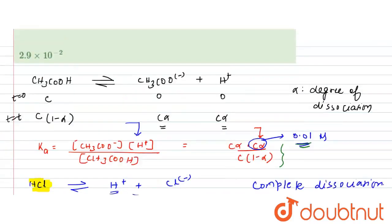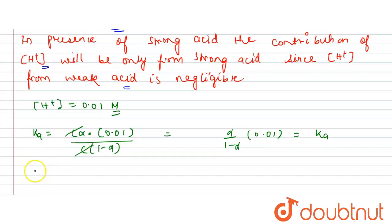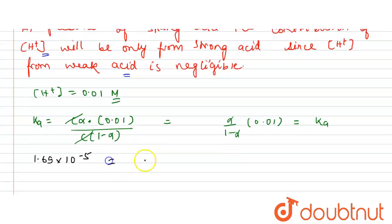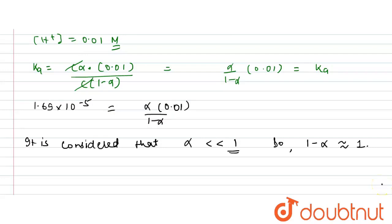The dissociation constant Ka is given as 1.69 × 10⁻⁵. So: 1.69 × 10⁻⁵ = α × 0.01 / (1 − α). Since alpha is very, very small compared to 1, we can approximate 1 − α ≈ 1, making the equation: 1.69 × 10⁻⁵ = α × 0.01 / 1.